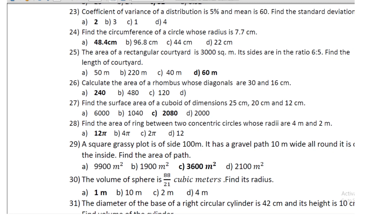Question 24: calculate the area of a rhombus whose diagonals are 30 cm and 16 cm; the area is 240 cm². Question 25: find the surface area of a cuboid of dimensions 25 cm, 20 cm, and 12 cm.